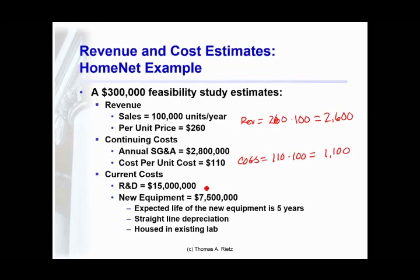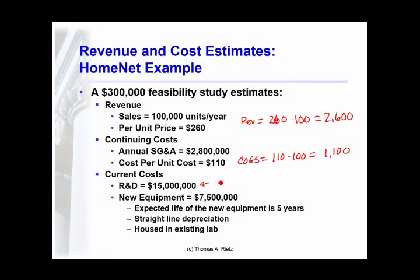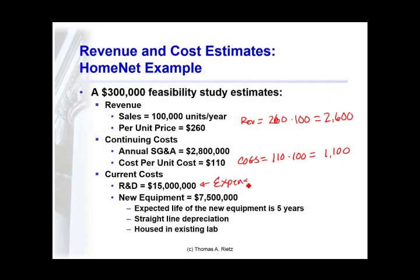Research and development expenses to bring this product to market — developing the actual box and the systems within it — can be expensed immediately. New production equipment actually has to be capitalized. For the capitalized expenses, we're going to write them off on a straight-line depreciation schedule over five years.